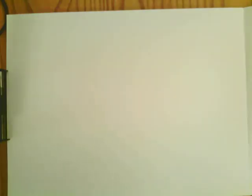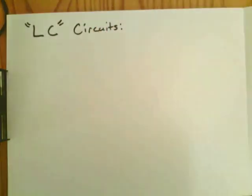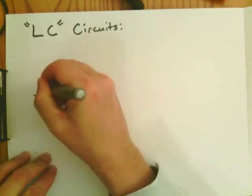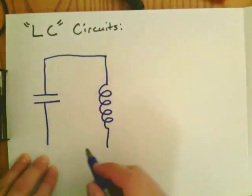What do we mean by an LC circuit? An LC circuit is a circuit where we have a capacitor in series with an inductor. The capacitor is given value C and inductor L.